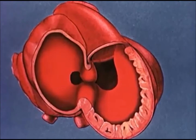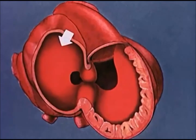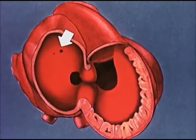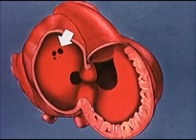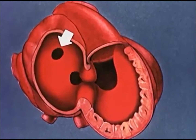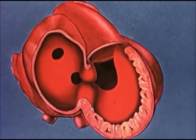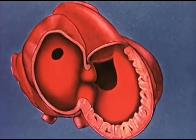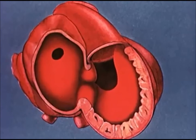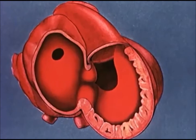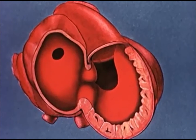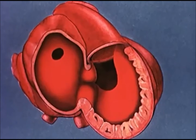Before the foramen primum becomes obliterated, a new opening appears high on the interatrial septum. The timely development of this orifice, the foramen secundum, provides uninterrupted shunting of blood from the right atrium directly into the left.